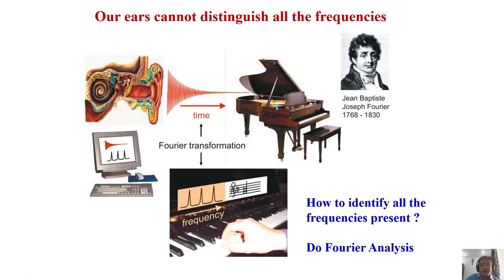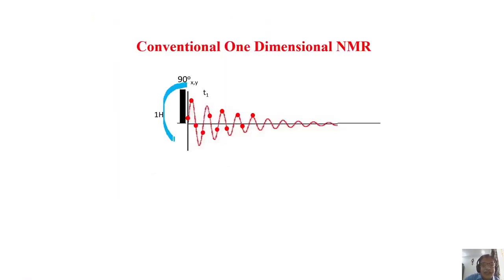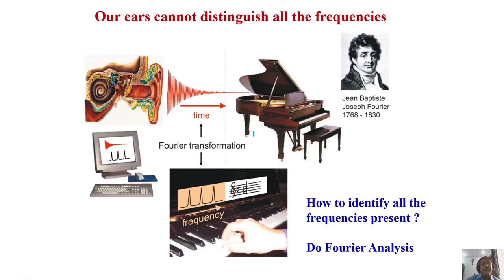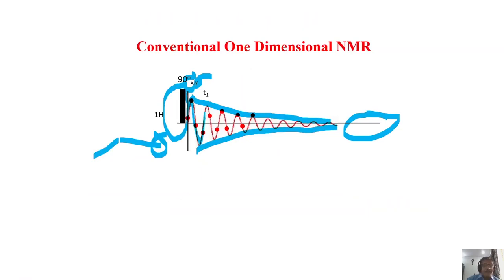In conventional one-dimensional NMR, we apply a 90 degree pulse and put the receiver along the x-axis. The pulse brings the magnetization from Z to the XY plane — if applied along x-axis, the magnetization goes to y-axis. We start collecting the signal in the perpendicular axis and digitize it. The signal is an exponential decay and oscillatory. In reality, many frequencies are present — if there are 50 peaks in the spectrum, there are 50 FIDs superimposed, looking like an interferogram.